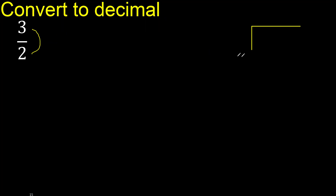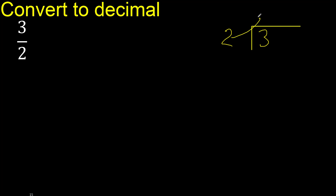3 divided by 2. 3 is not less than 2, therefore with 3: 2 multiplied by 2 is 4, but 4 is greater than 3. Therefore another number: 2 multiplied by 1 is 2. 2 is not greater than 3.